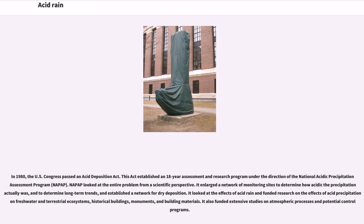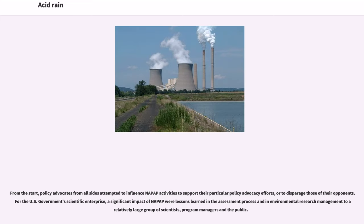NAPAP looked at the entire problem from a scientific perspective. It enlarged a network of monitoring sites to determine how acidic the precipitation actually was and to determine long-term trends, and established a network for dry deposition. It looked at the effects of acid rain and funded research on the effects of acid precipitation on freshwater and terrestrial ecosystems, historical buildings, monuments, and building materials. It also funded extensive studies on atmospheric processes and potential control programs. From the start, policy advocates from all sides attempted to influence NAPAP activities to support their particular policy advocacy efforts. A significant impact of NAPAP were lessons learned in the assessment process and in environmental research management for scientists, program managers and the public.